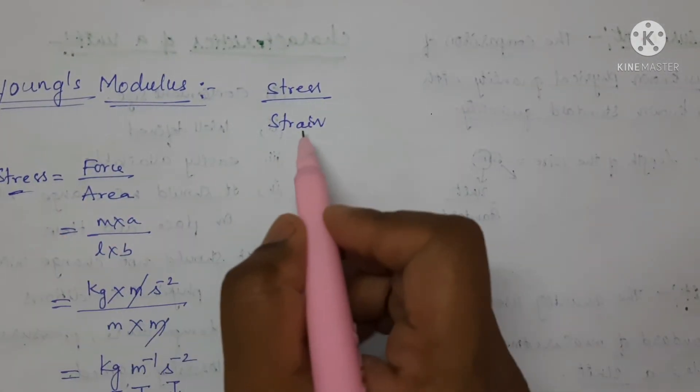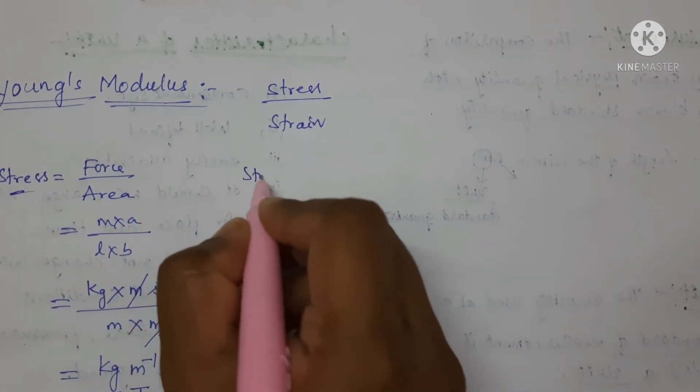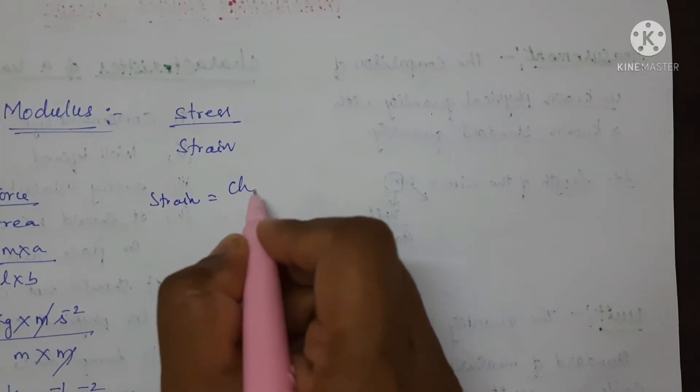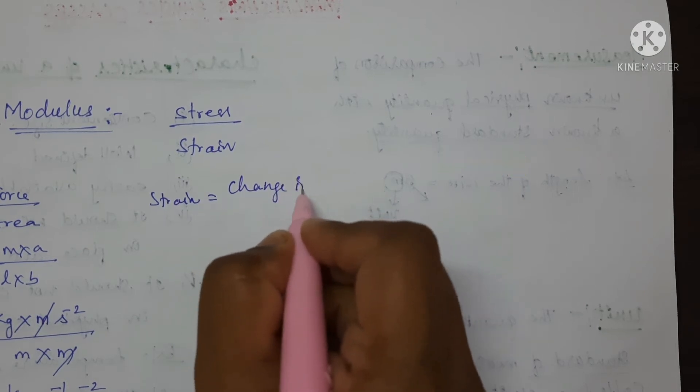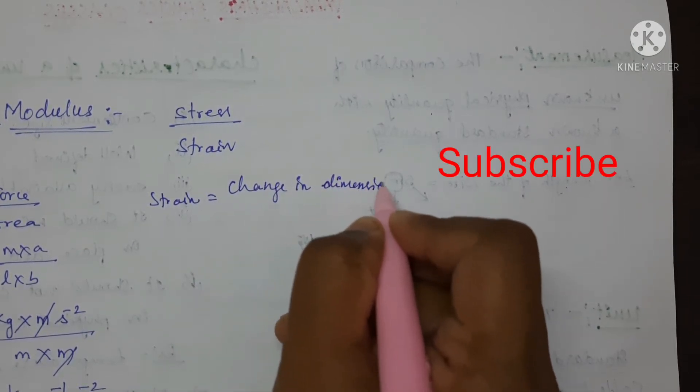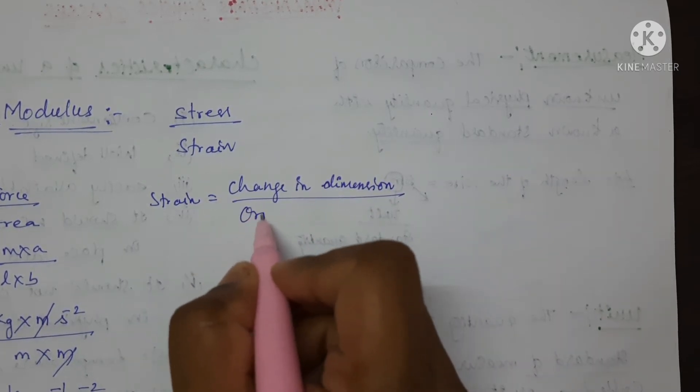Again, we have to find the formula for strain. Strain is equal to change in dimension to the original dimension.